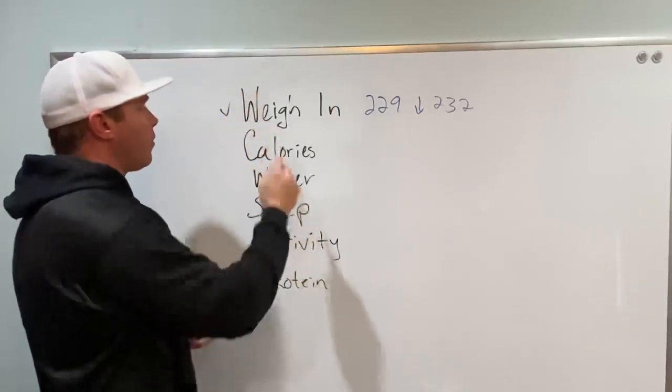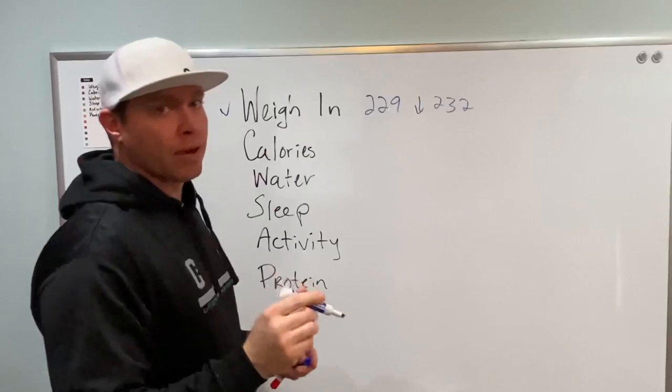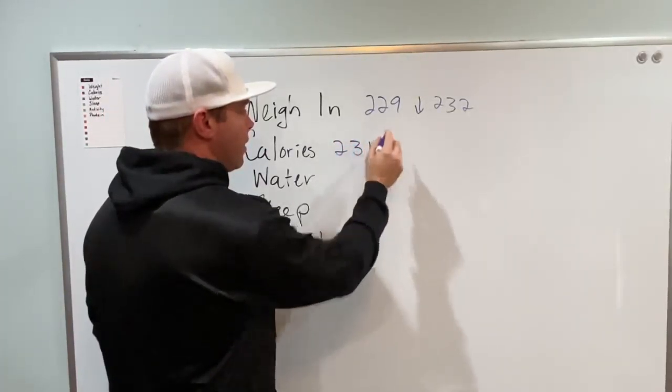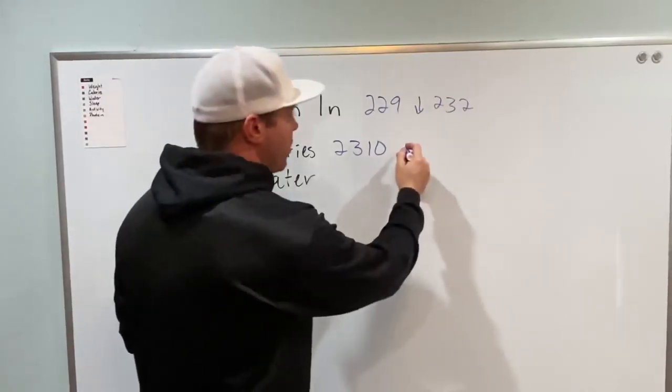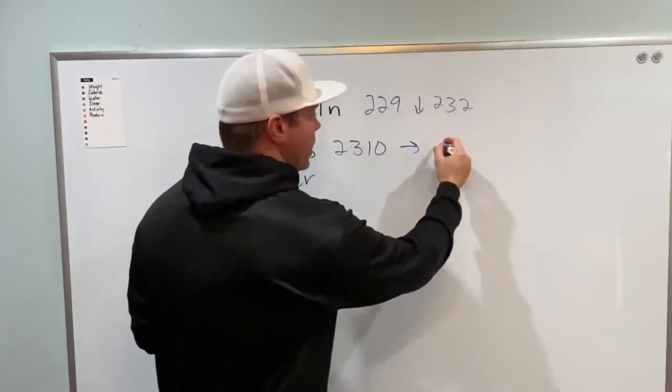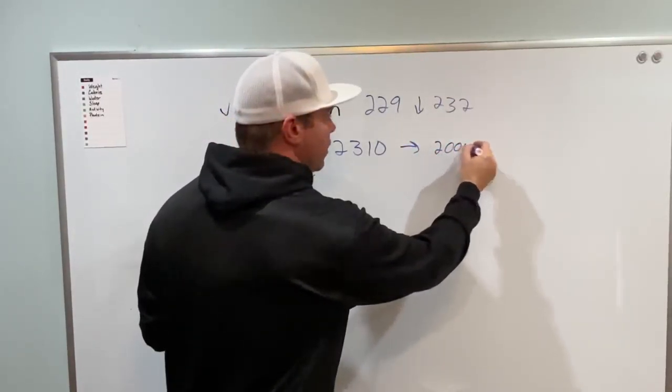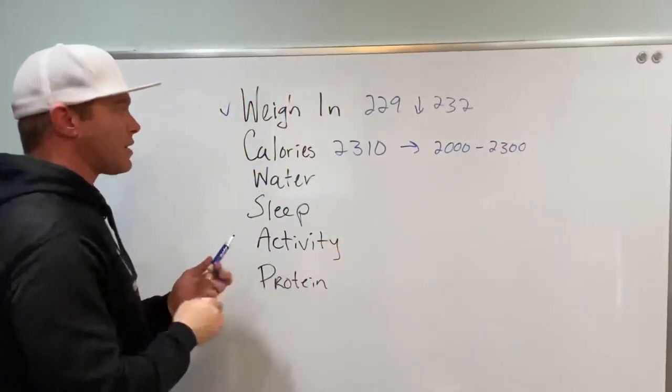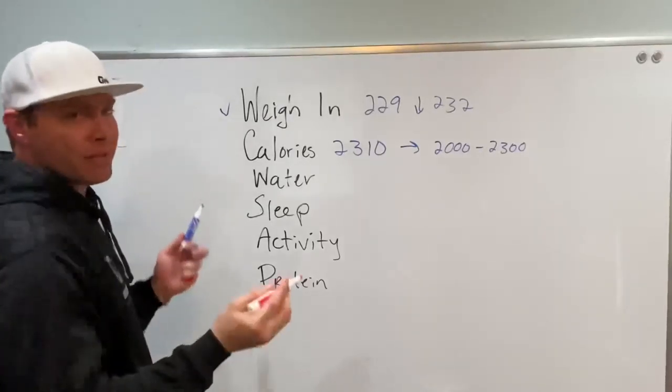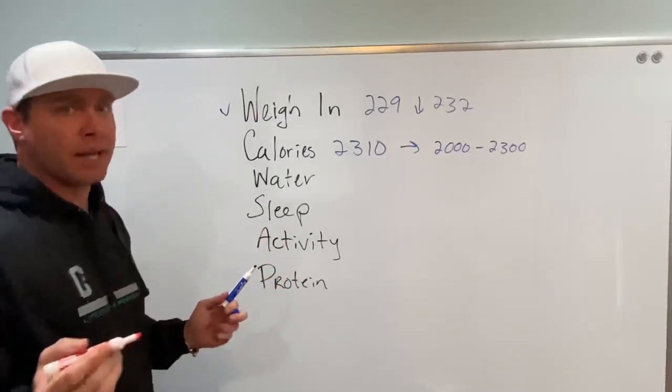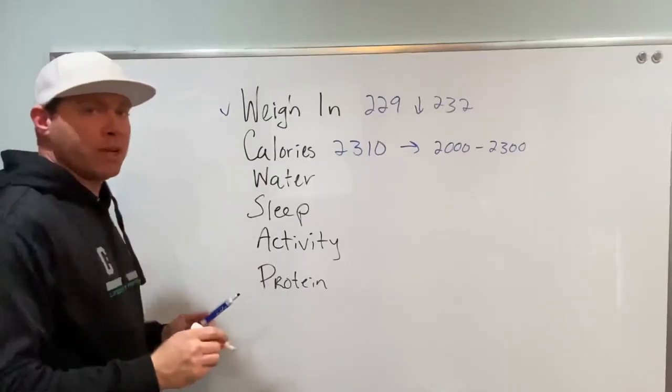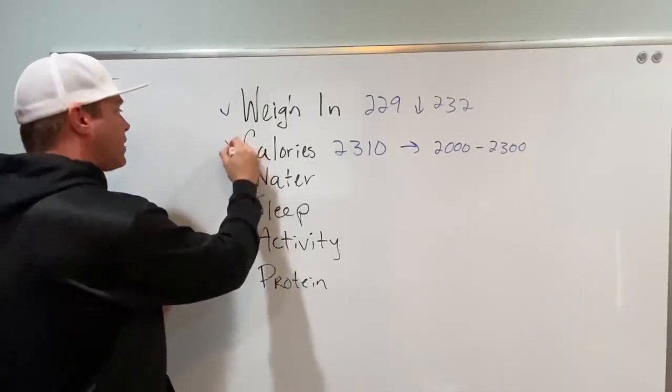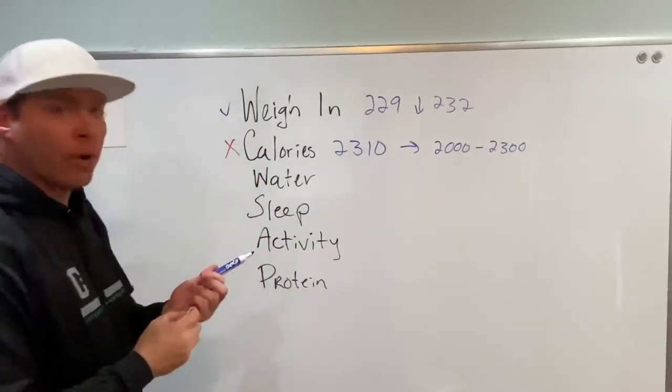Check mark on the weigh in. And as far as calories are concerned, I did go over my calories. So I did 2310 for my calories. If you guys remember, my calorie range that I wanted to hit was 2000 to 2300. So I did go over a little bit yesterday. I don't care if it's only 10 calories. You might say, oh, it's only 10 calories. Well, if you did that for a year, you'd gain a pound. So we're going to say, nope, didn't get my calories. But it's okay.